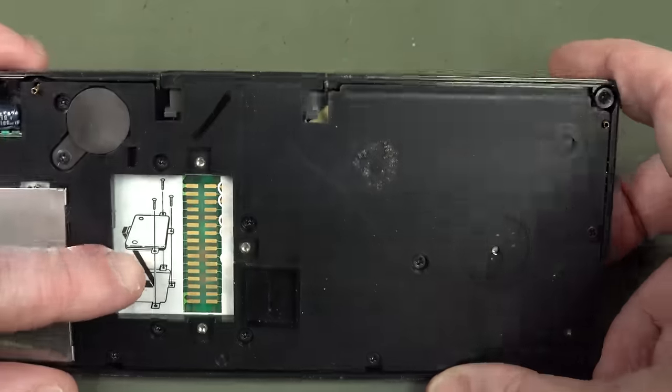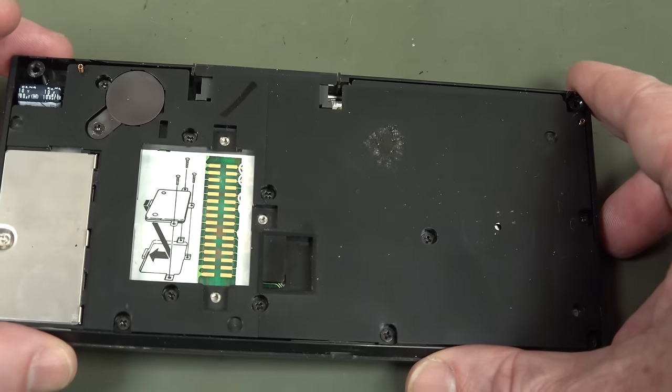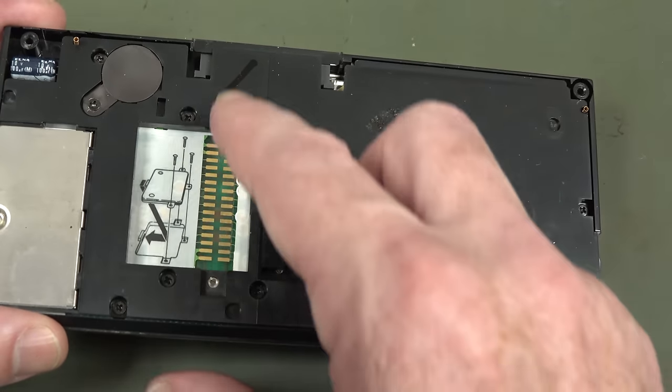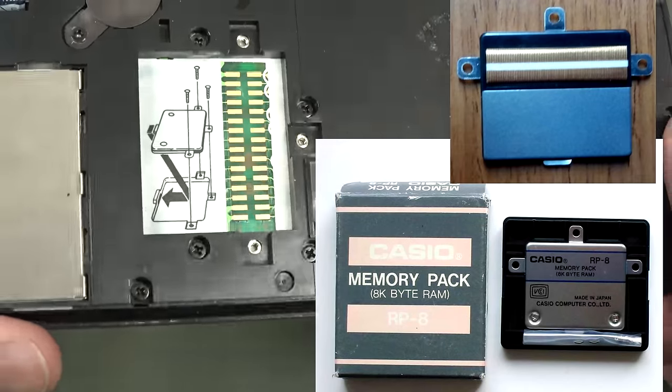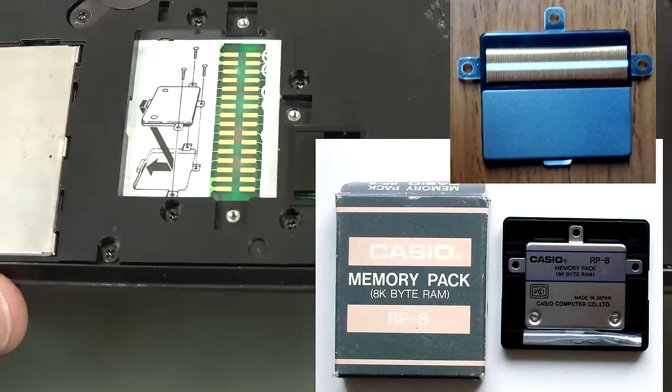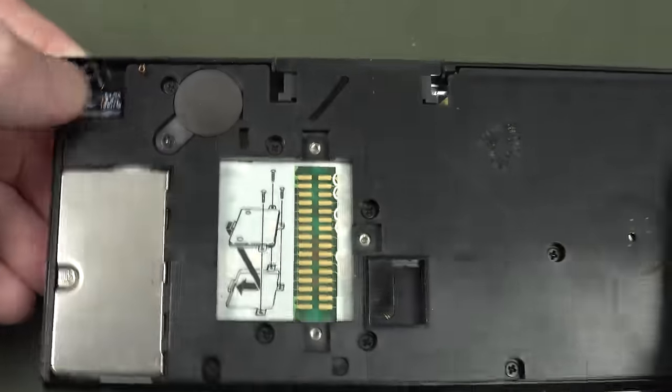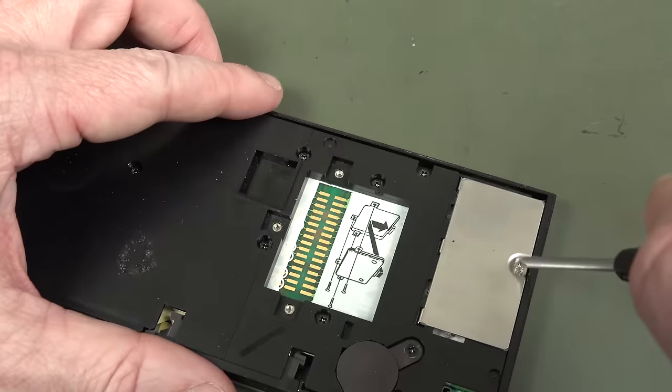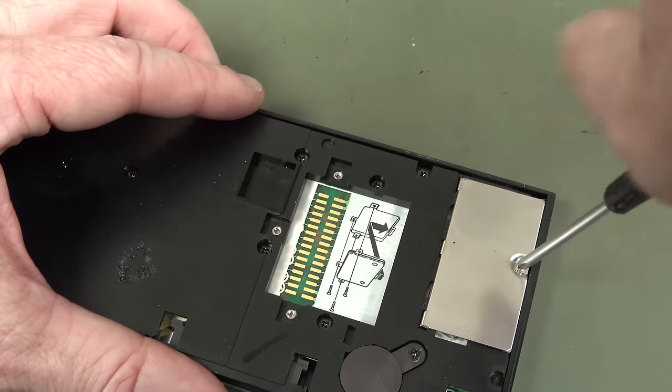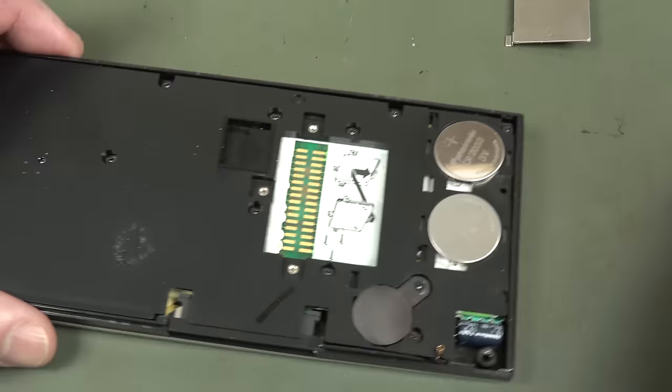You could expand it with another 8K of RAM, which probably cost you a fortune back in the day. And there we go. Looks like we had snow. Is that the memory expansion? This might be IO expansion. This would be internal memory expansion. It just plugged in there and made contact. Maybe they have pogo pins in the memory card or something.